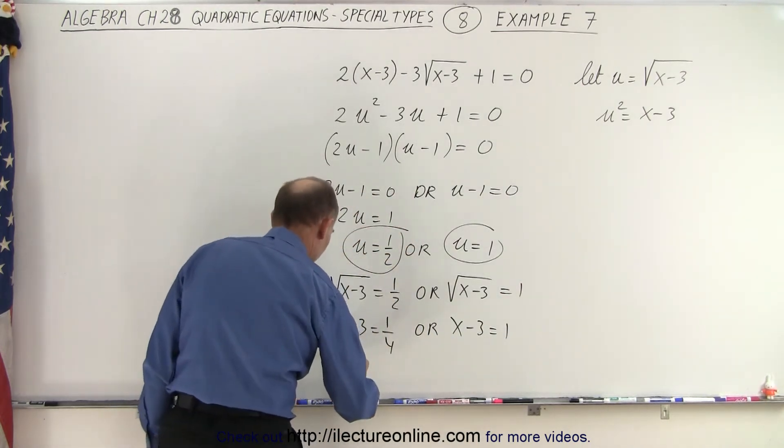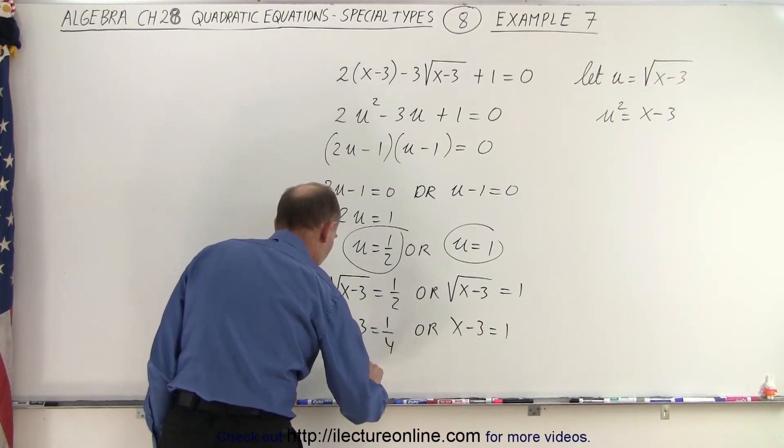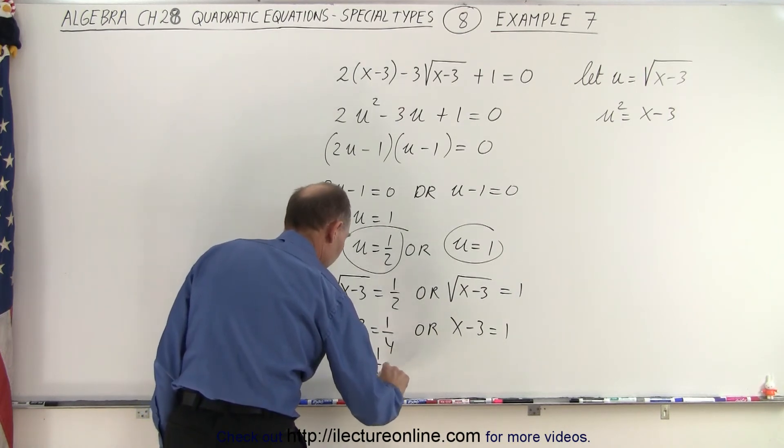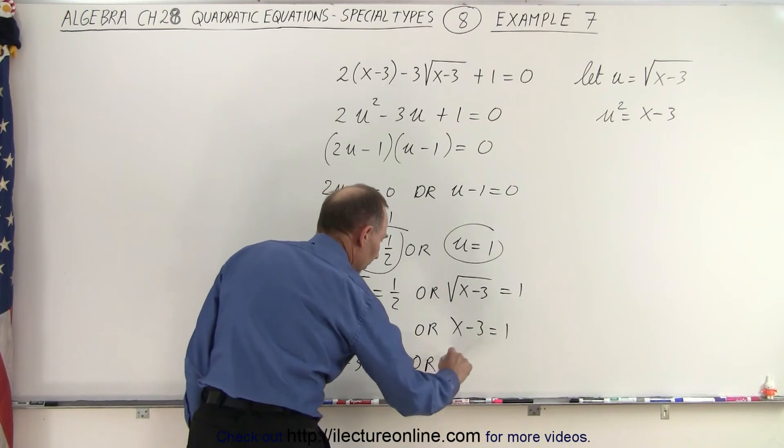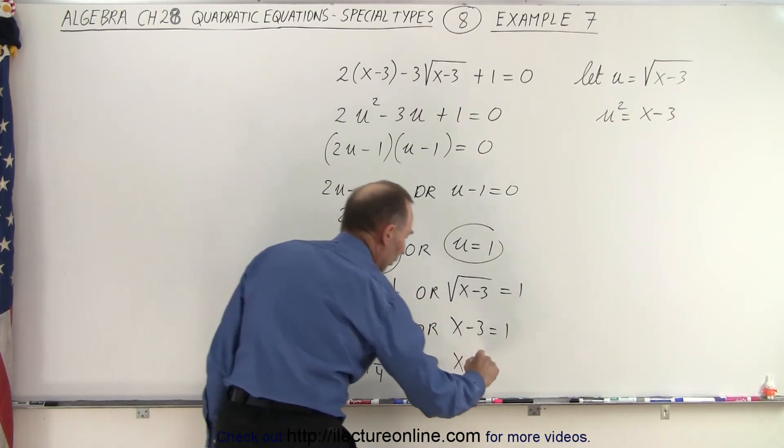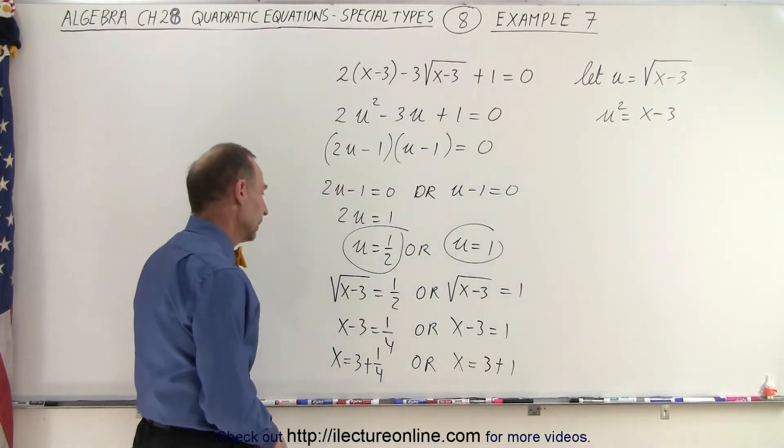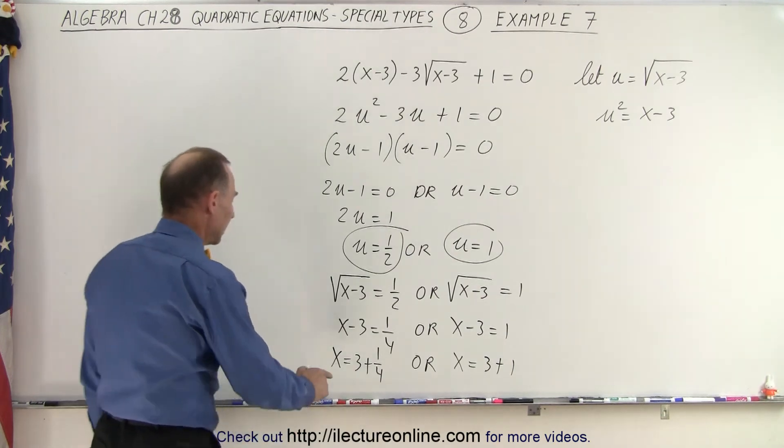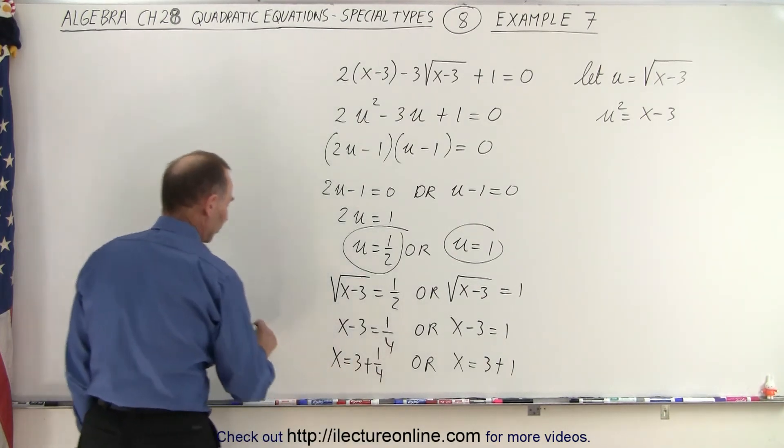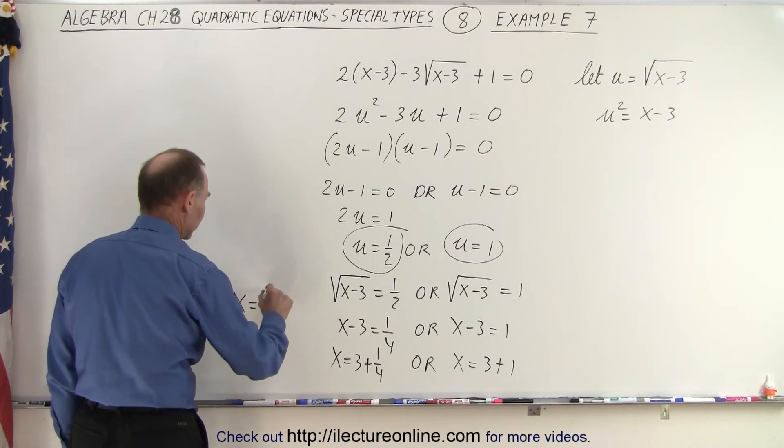Here, we can move that to the other side. We get x is equal to 3 plus 1-quarter. And here, we say that x is equal to 3 plus 1. That's 12 plus 1 is 13, so we can write x is equal to 13 over 4.